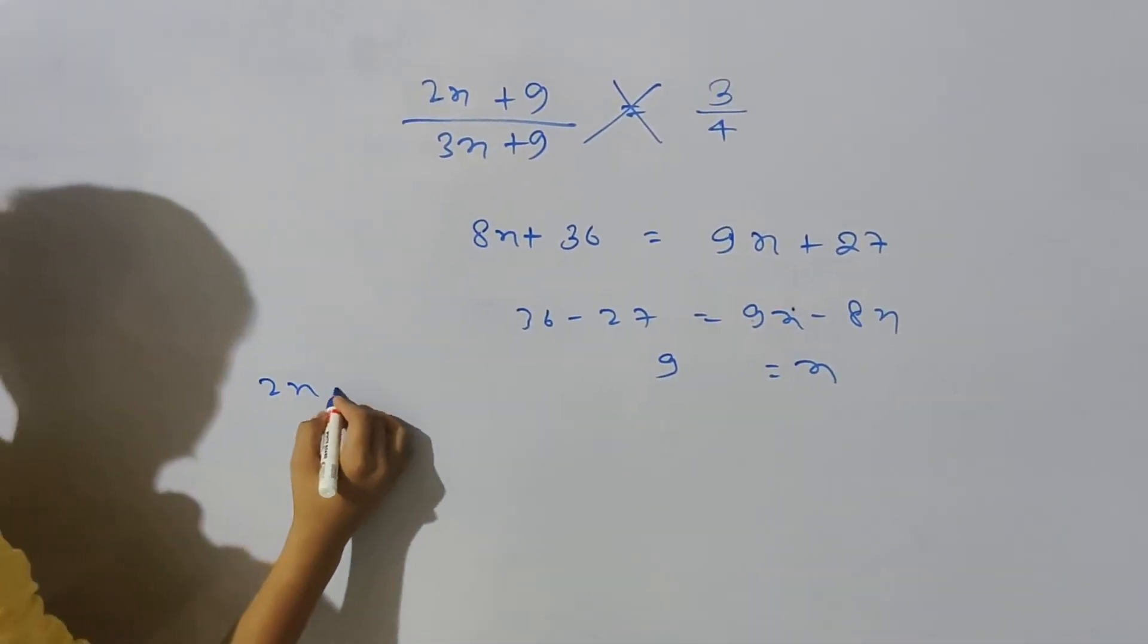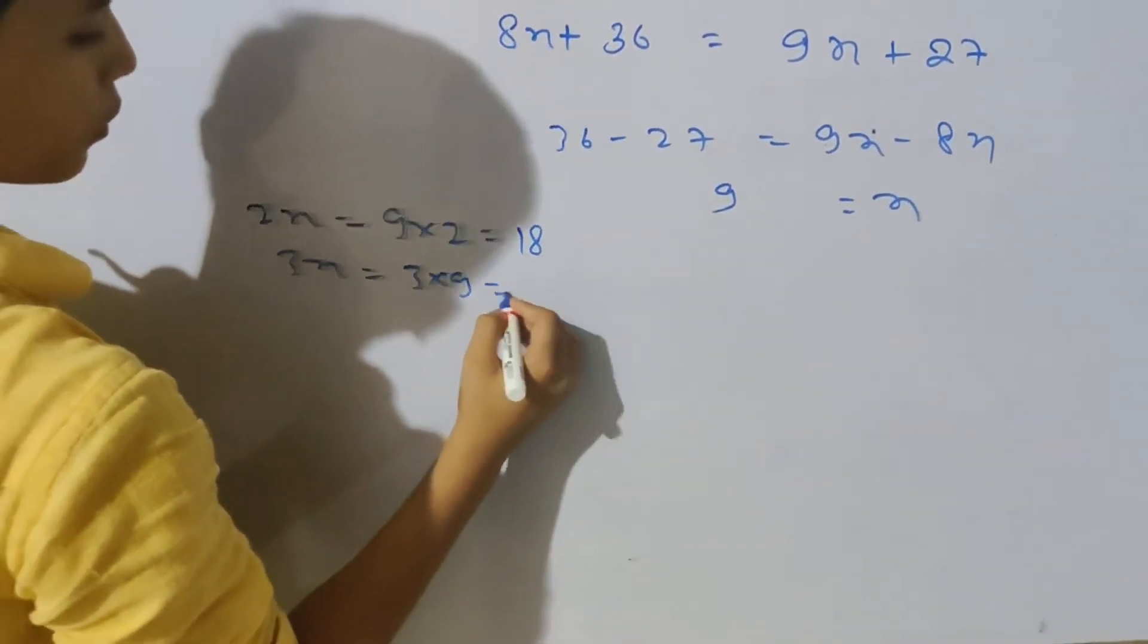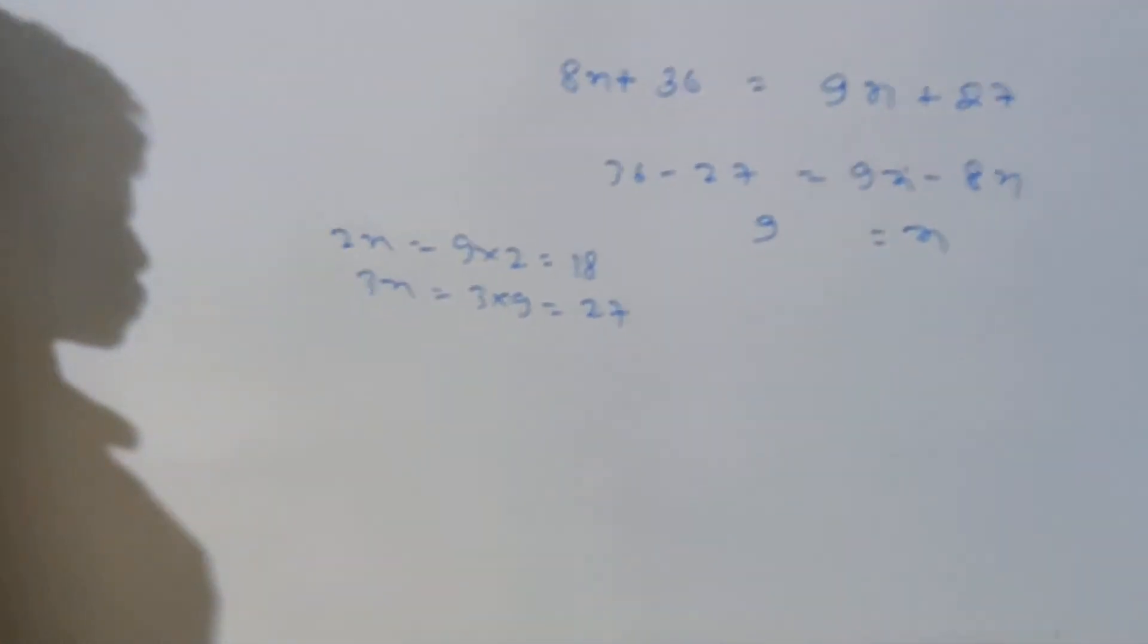What are the numbers? 2x equals 9 multiplied by 2, which is 18. And 3x equals 3 multiplied by 9, which is 27. Next question.